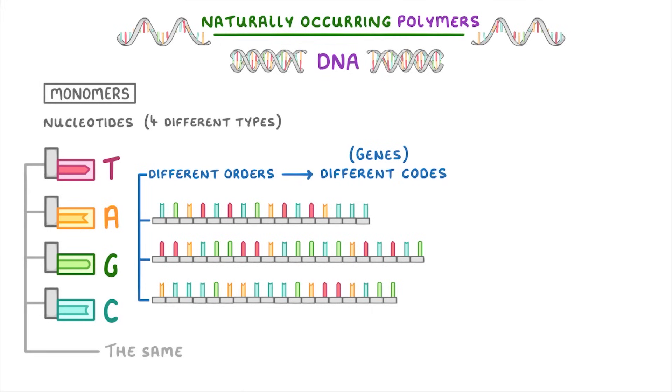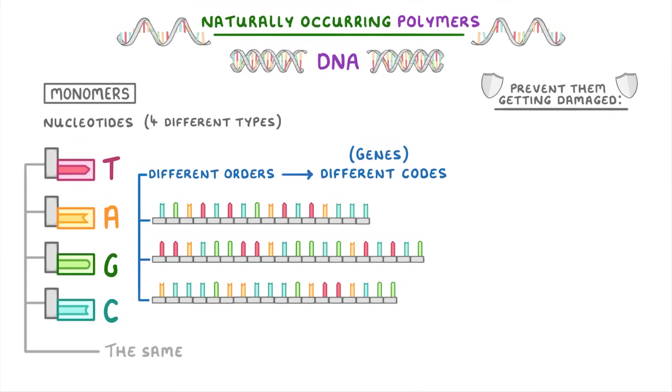To keep these codes intact and prevent them from getting damaged, DNA is actually made of two polymer chains that are linked together, and this double strand naturally coils to form a double helix.